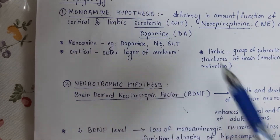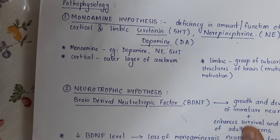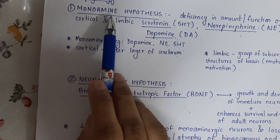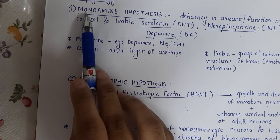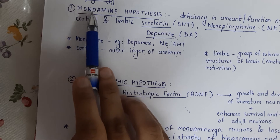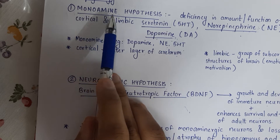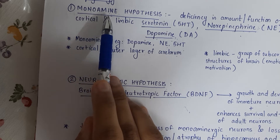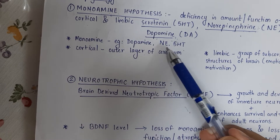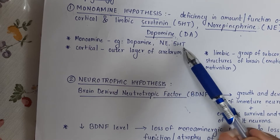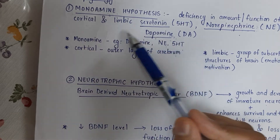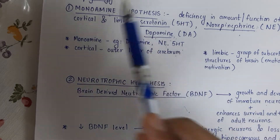The first is the monoamine hypothesis. When you look at the term monoamine, it's very simple — mono means single, amine refers to amino group. Monoamine compounds include tyrosine, tryptophan, and other amino acids like dopamine, norepinephrine, and serotonin. These three are also monoamines.